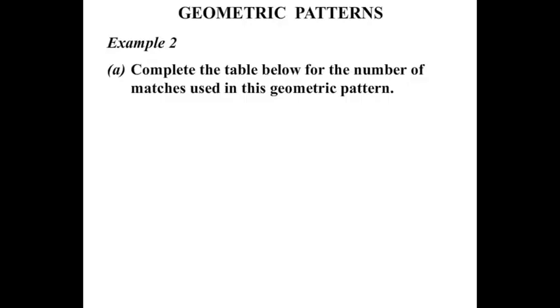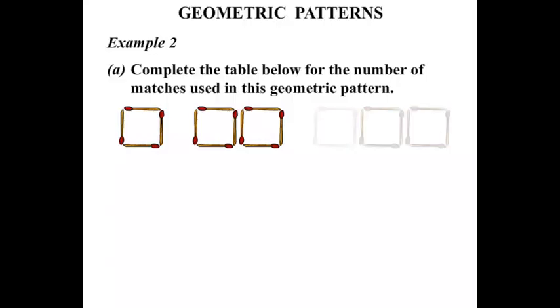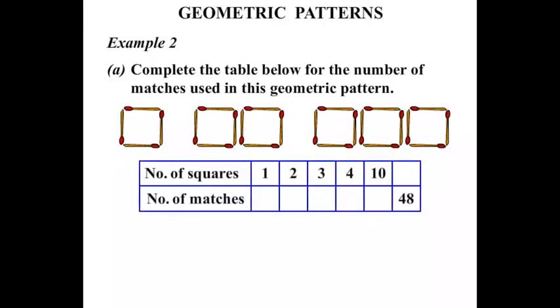Example two: we're asked to complete the table below for the number of matches used in this geometric pattern. This time we've got squares. One square has four matches. Two squares looks like four and four is eight. Three squares looks like four and four and four — twelve matches. So let's complete this table. When there was one square, the number of matches required was four.